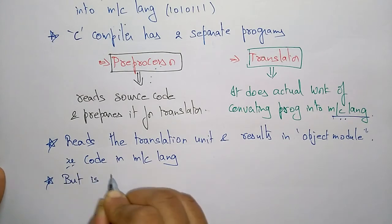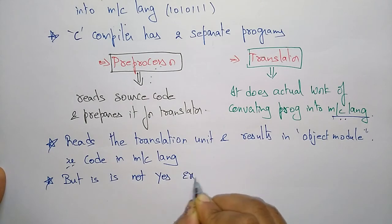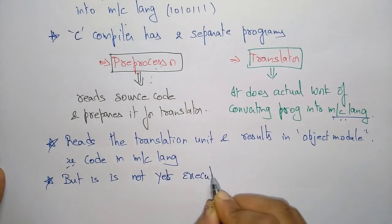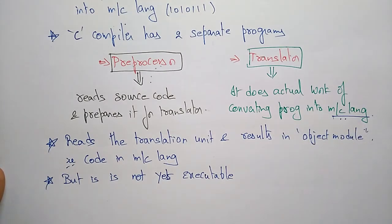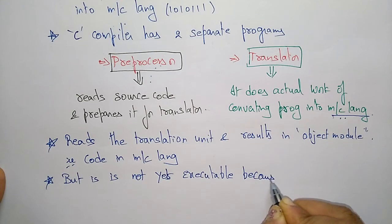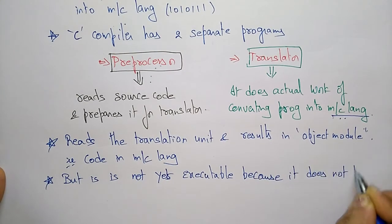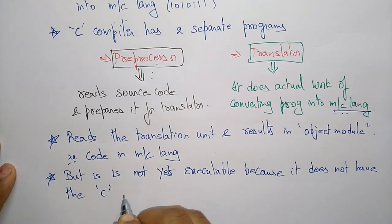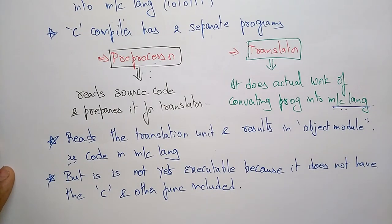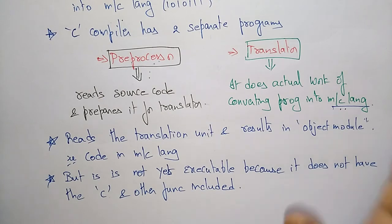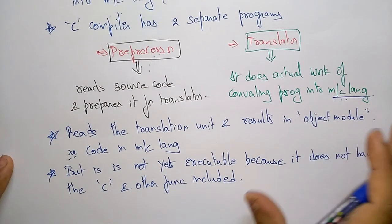It is not yet executable. Even though the programming language has been converted into machine language — and the processor can understand what the user has written — it is still not executable. This is because it does not have the C library functions and other functions included. Only the program source file is converted. You still have to link the source file to the library functions, and for that you need a linker.